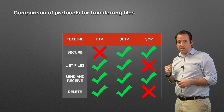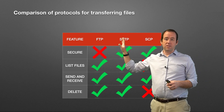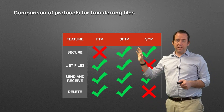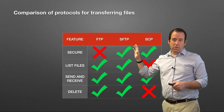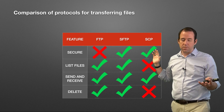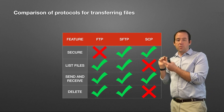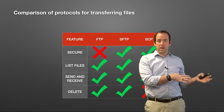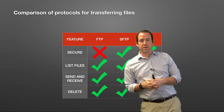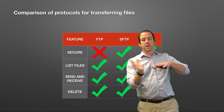A quick comparison: FTP lets you list files, send and receive, and delete files — but it's not secure since it uses plain text. SFTP adds security on top of FTP and still has all those functionalities. SCP is super simple, can be run on the command line, and lets you securely send or receive files — but you can't do listing or deleting. For that, you'd use SSH separately to manage files, then use SCP to download them once you know what you want.